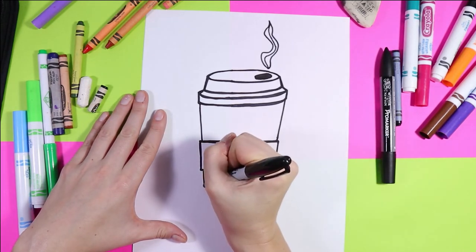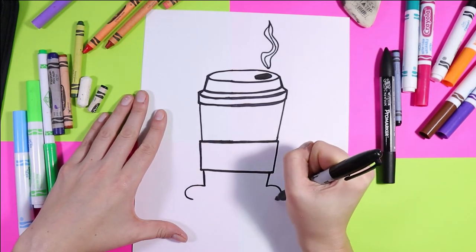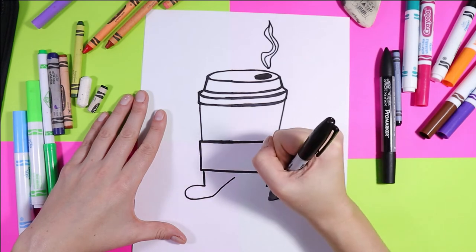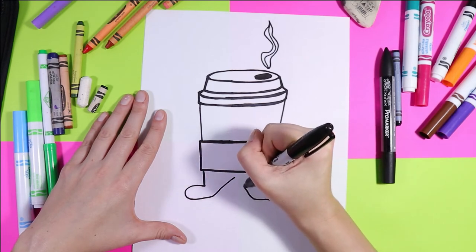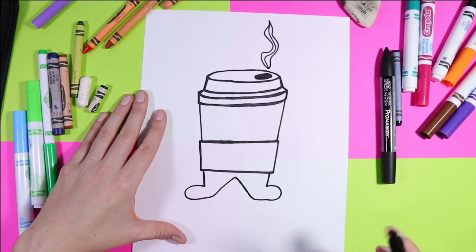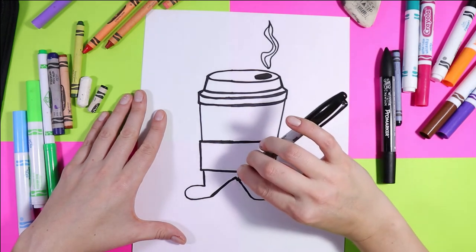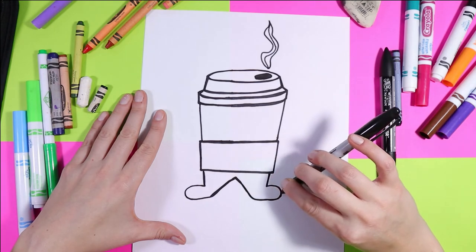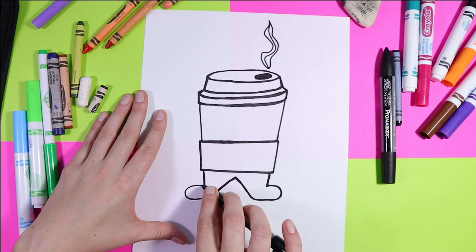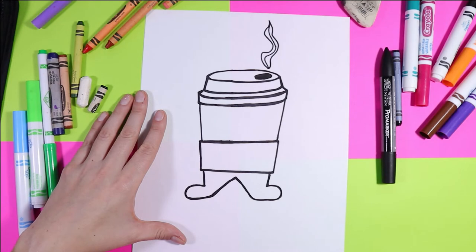Now we're going to add some feet. So curve line out, curve line out, up on a diagonal. And those two lines can meet just like that. Thicken up the lines. Perfect.